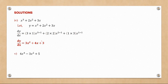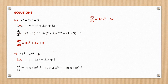For example five, we have 4x to the power four minus 3x squared plus 5. The constant 5 differentiates to zero because we treat it as 5 times x to the power zero; multiplying by the index zero gives zero. So dy/dx equals 16x cubed minus 6x.